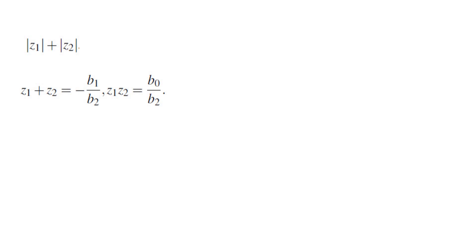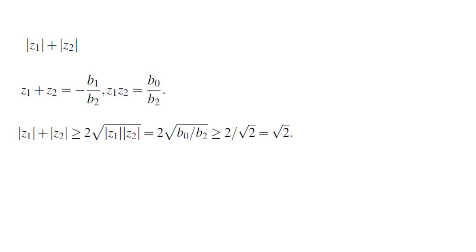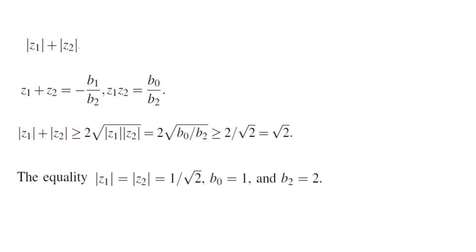So I need to relate |z1| + |z2| with Vieta's formulas, and of course that is done using AM-GM. So |z1| + |z2| is at least 2√(|z1|·|z2|) = 2√(b0/b2). Since b0 is at least 1 and b2 is at most 2, this gives us that the sum is at least √2. Now we have to check if equality holds, because we are trying to find the largest lower bound. For equality in AM-GM, we need |z1| = |z2|, which means they would both have to be 1/√2.